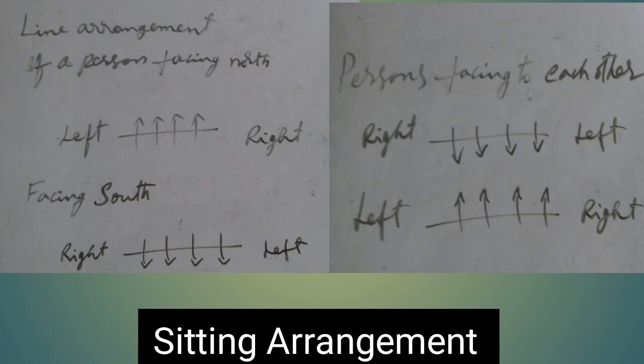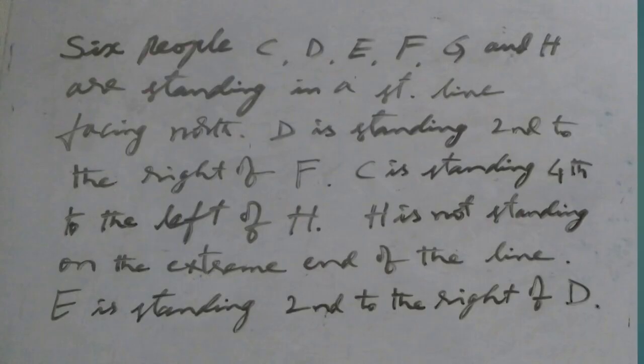Now, in this sitting arrangement problem, six people — C, D, E, F, G, and H — are standing in a straight line facing north, not necessarily in the same order.